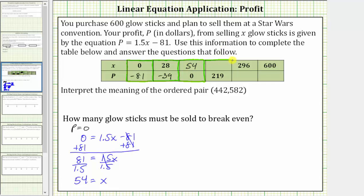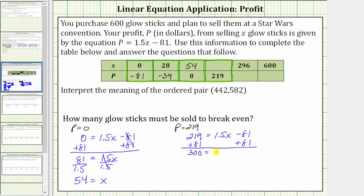In the next column, we're given P equals 219. We need to determine the value of X. So if P equals 219, we substitute 219 for P in the profit equation, giving us 219 equals 1.5X minus 81. Following the same steps, we add 81 to both sides, which gives us 300 equals 1.5X. Then we divide both sides by 1.5. 300 divided by 1.5 is 200, so X equals 200. This tells us if 200 glow sticks are sold, the profit is $219.